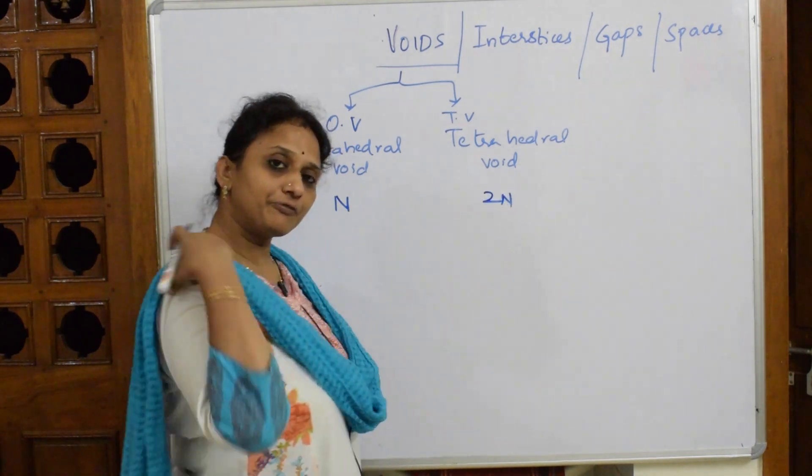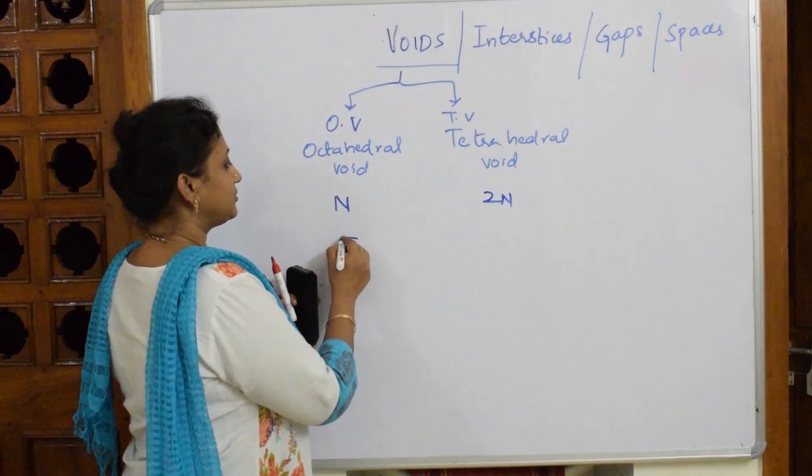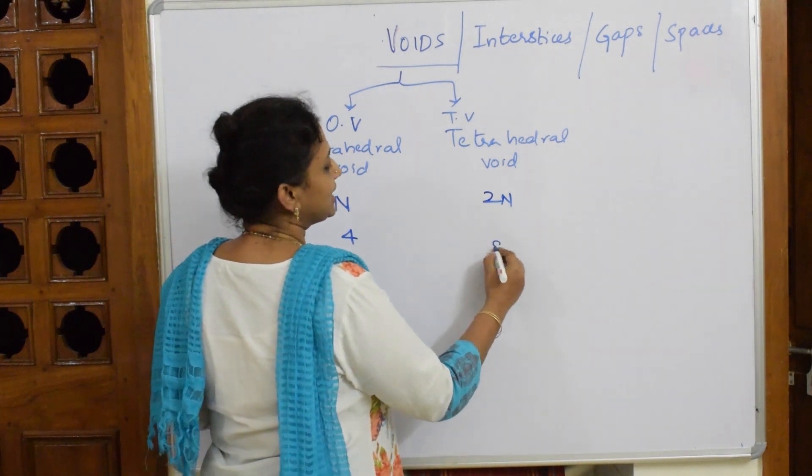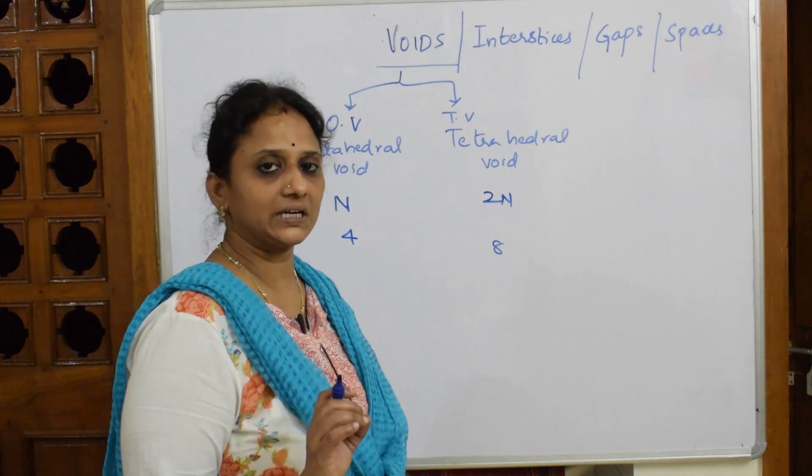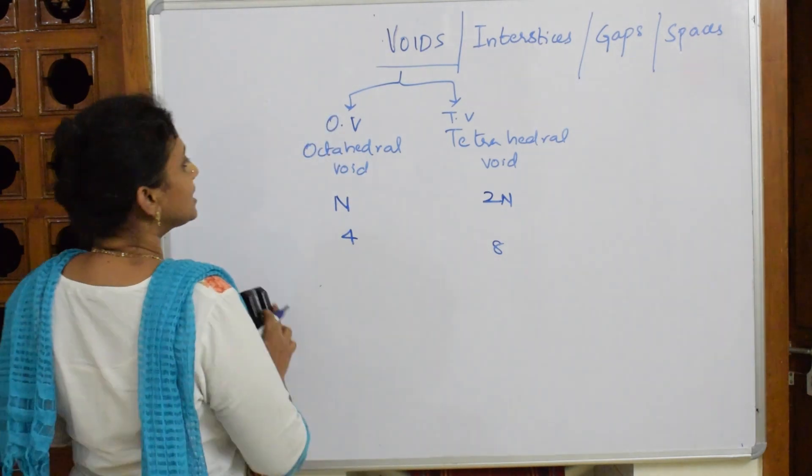Octahedral voids are always represented by n, and tetrahedral voids are always represented by 2n. That means if the number of octahedral voids are 4, it would be 8 - double the number. So tetrahedral voids are always double the octahedral voids.